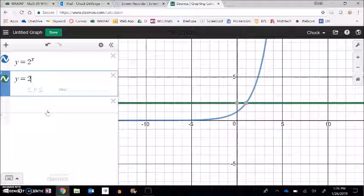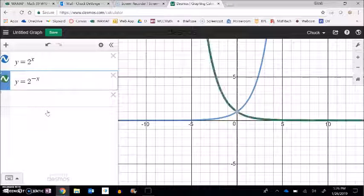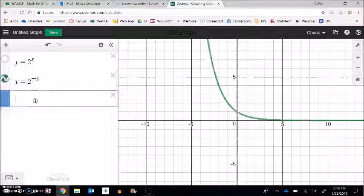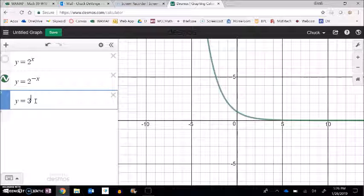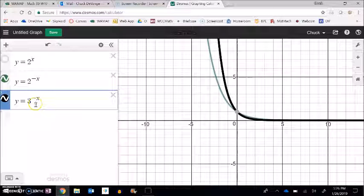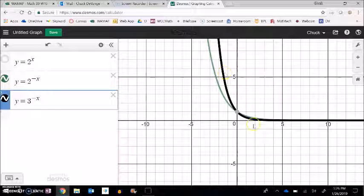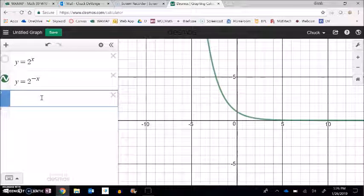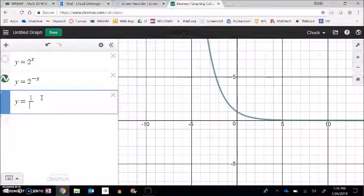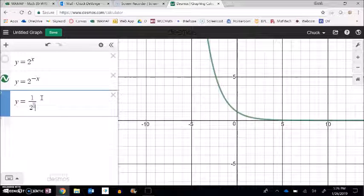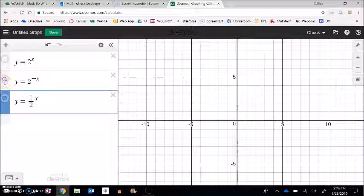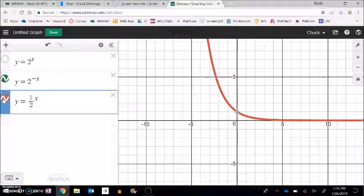We could do the same with the negative. So, like I said, the 2 to the negative x is just the reflection across the y-axis of 2 to the x. And I'm going to turn that off. And notice if I do y equals 3 to the negative x, it's going down faster, right? Like it's shrinking faster. Interestingly, this 2 to the negative x, it's going to be the same graph as 1 half to the power of x. They're the exact same graph.